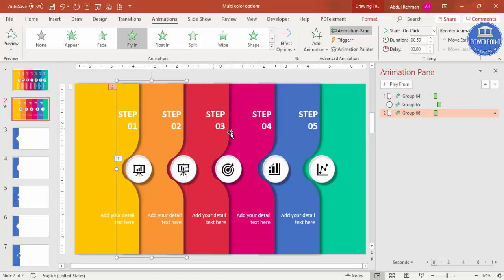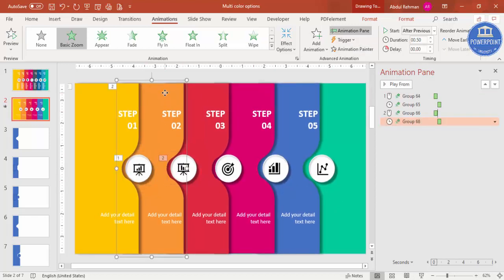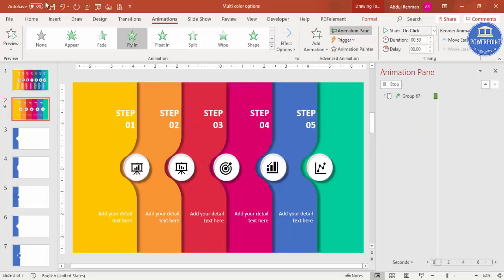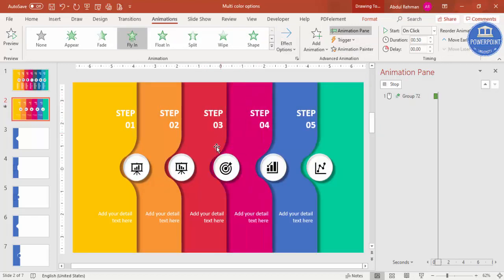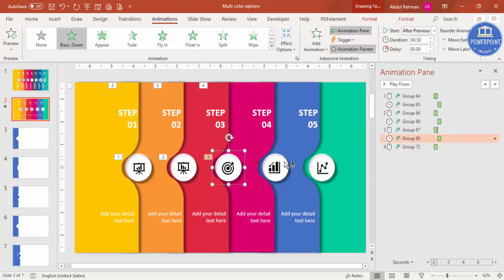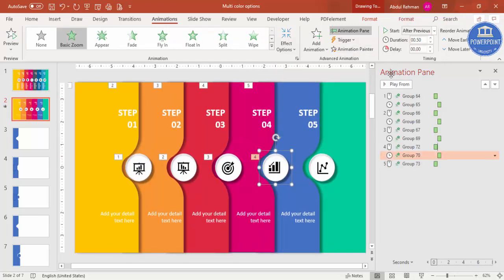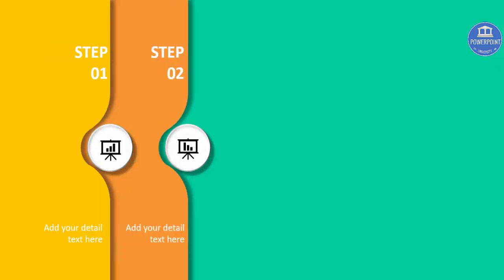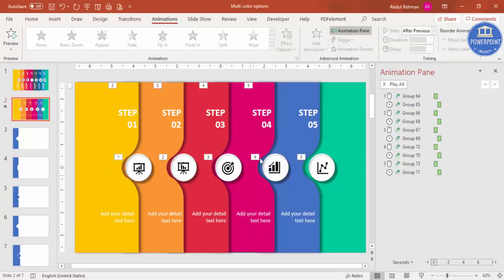Use Animation Painter to copy the animation to each subsequent step group and oval. Apply it to step 3, step 4, and step 5 in the same way. Preview in Slideshow — clicking will reveal step 1, then step 2, step 3, 4, and 5 sequentially. The animation is now complete.